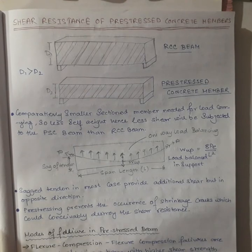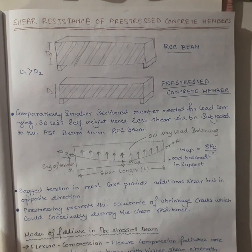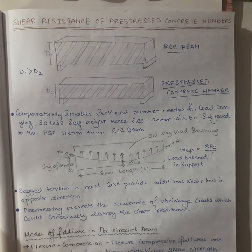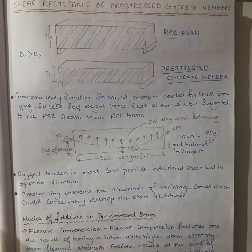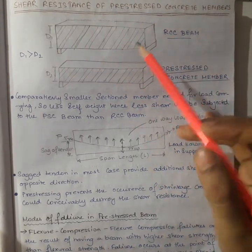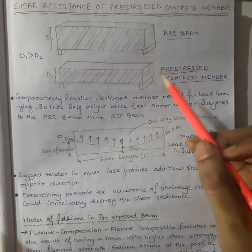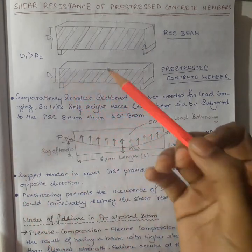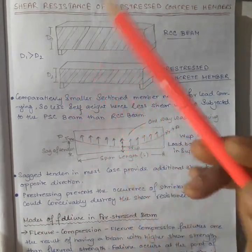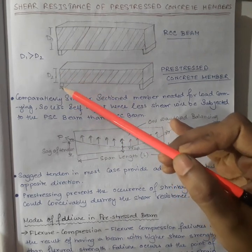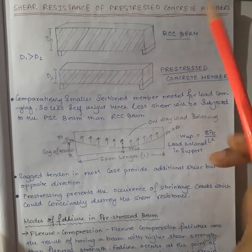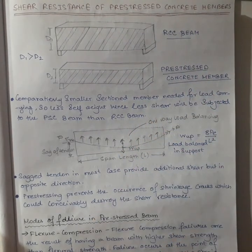Welcome back. Today's topic is the shear resistance of prestressed concrete members. We will discuss the modes of failures due to shear resistance, and progressively we will also take into account the torsional and bending effects. As we have discussed, due to the prestressing effect, we can significantly reduce the depth of any section compared to an RCC beam — which is already a positive point.